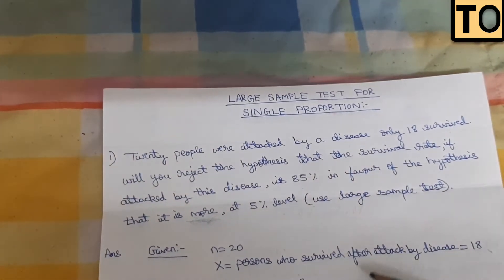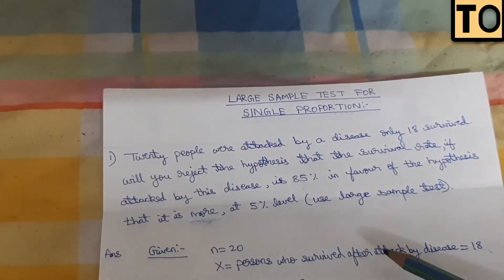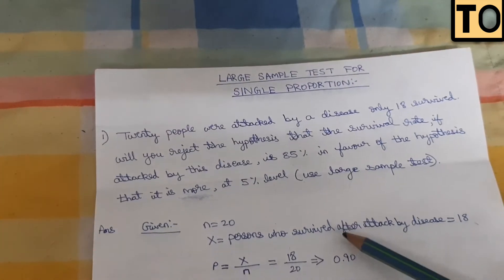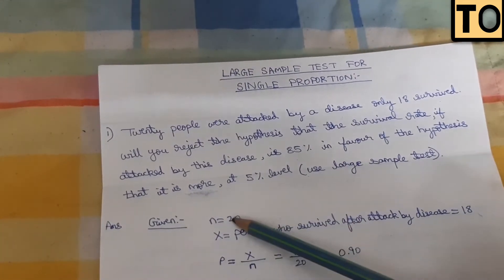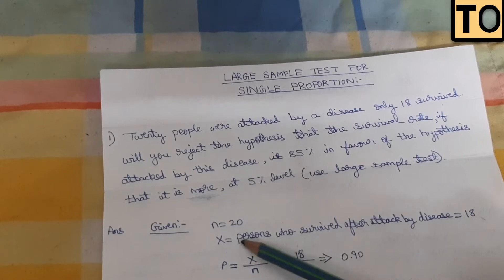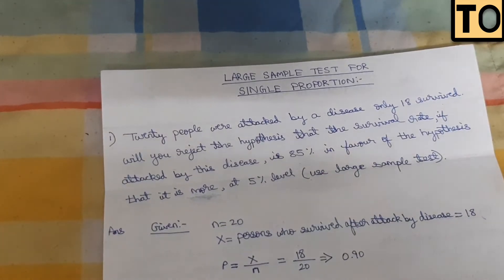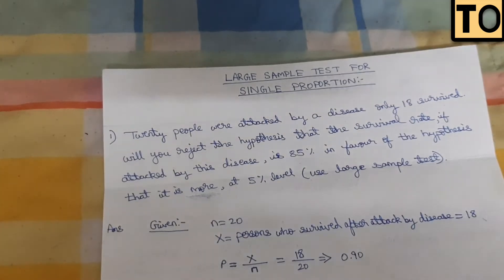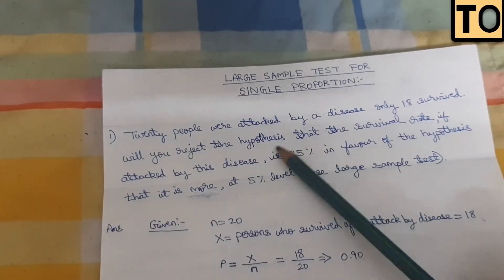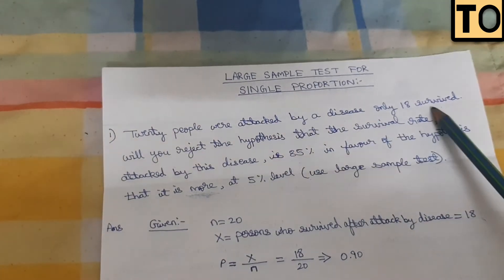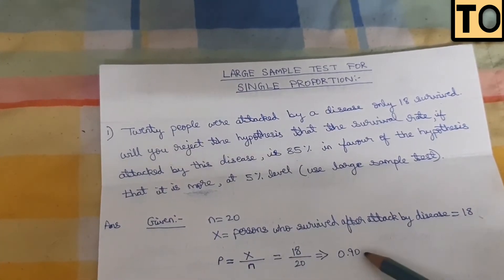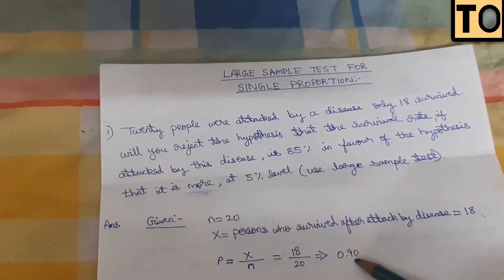The hypothesized proportion is denoted capital P, and the sample proportion is denoted small p. The total number is capital X over n. We have 20 people in total and 18 survivors, so capital X is 18 and n is 20. Therefore, the sample proportion p̂ equals 18 divided by 20, which gives 0.90.